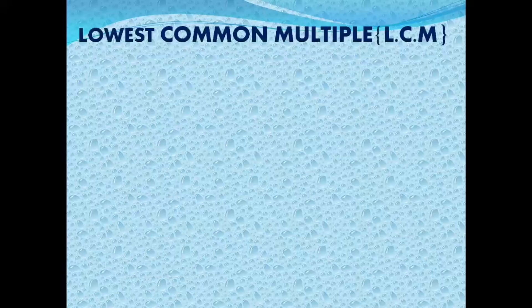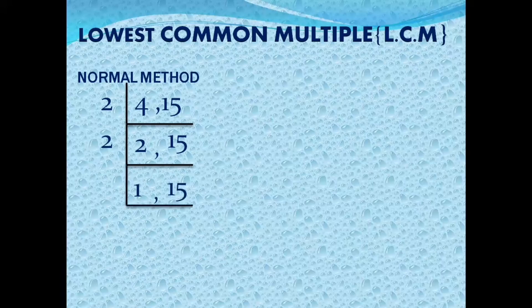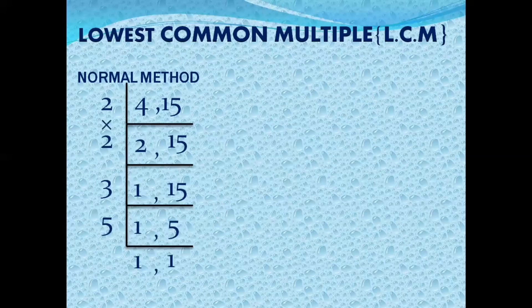Next question: LCM of 4 and 15. Normal method — divide by 2: 4 divided by 2 is 2, 15 can't divide. Again by 2: 2 divided by 2 is 1, 15 remains. Move to 3: 15 divided by 3 is 5. Move to 5: 5 divided by 5 is 1. Multiply 2×2×3×5 = 60.